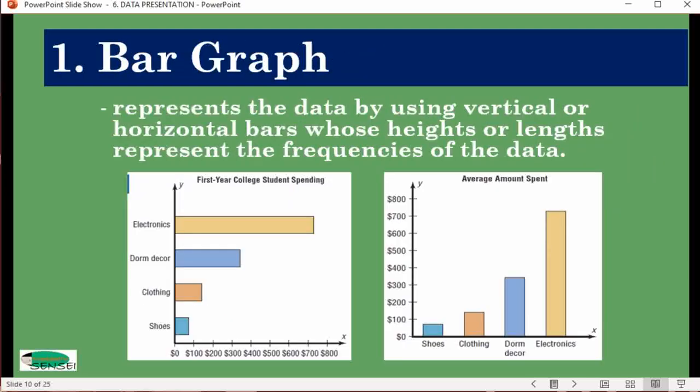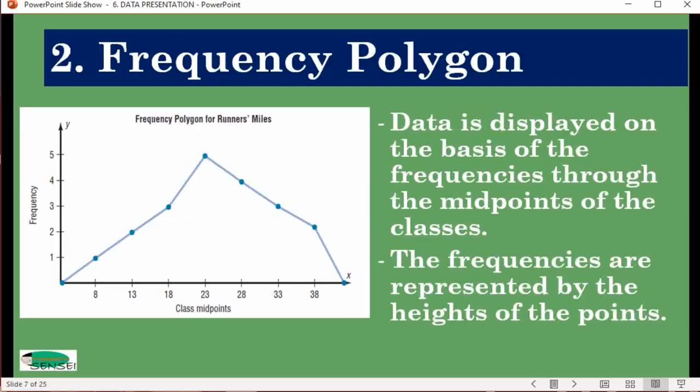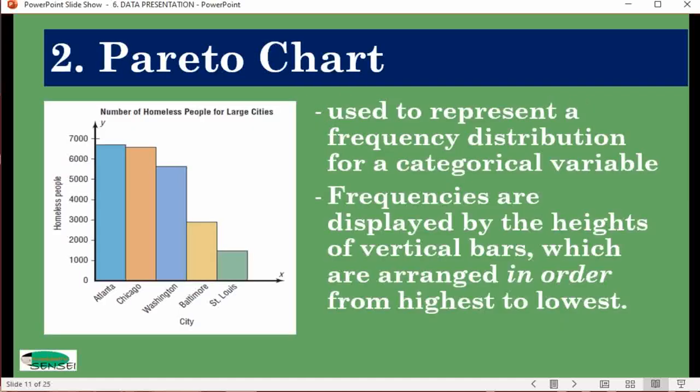Before I proceed, let's go back to bar graph, histogram, and Pareto chart and how they're different from each other. In histogram, the vertical graphs are contiguous but not arranged. If there's no frequency, you leave the space blank. For bar graph, there is a space between each bar. For Pareto chart, there is no space—it's contiguous—however there is an arrangement of frequency, with the highest frequency first on the left side.